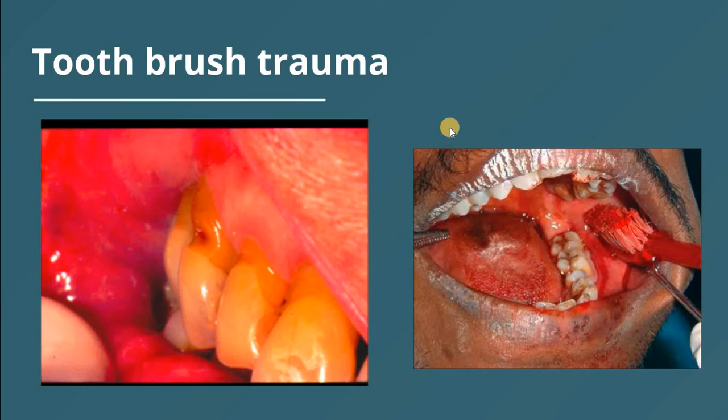In cases of toothbrush trauma, there are three things to be aware of: frequency, duration, and technique. Frequency should not exceed three times a day — three times is enough. Regarding duration, it should not be only 30 seconds or one minute; it should be three to five minutes, without exerting too much force and without using abrasive toothpastes.